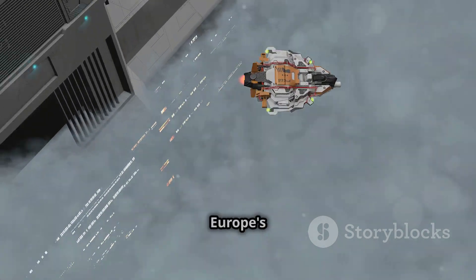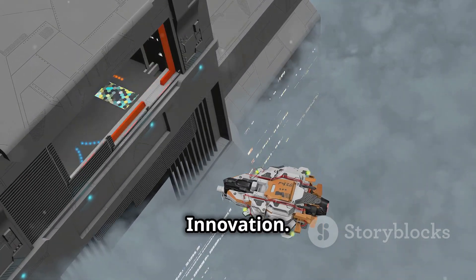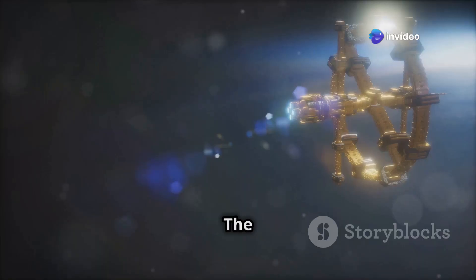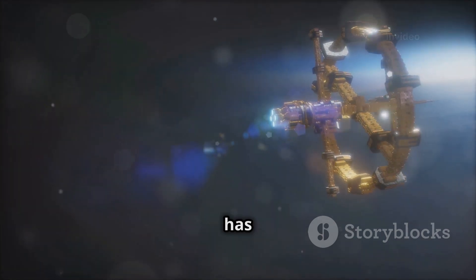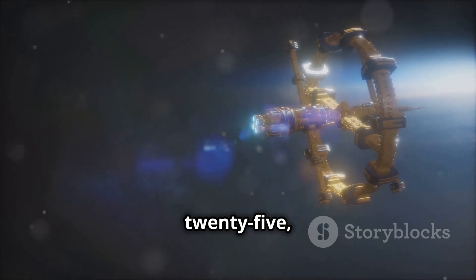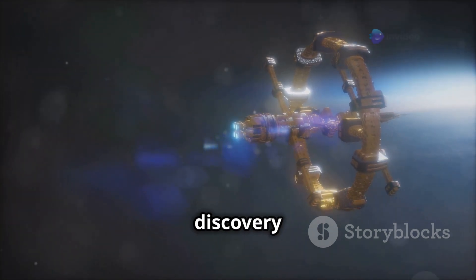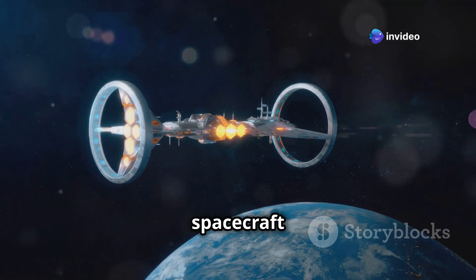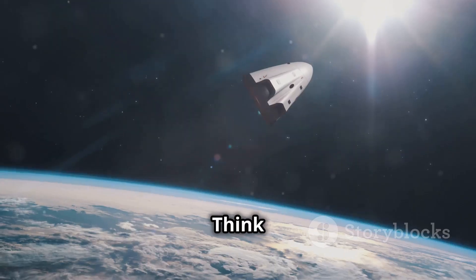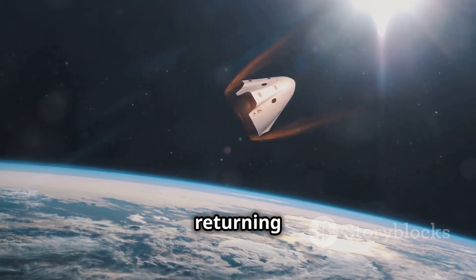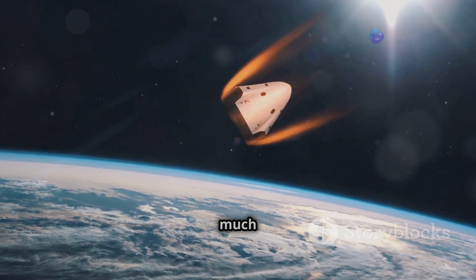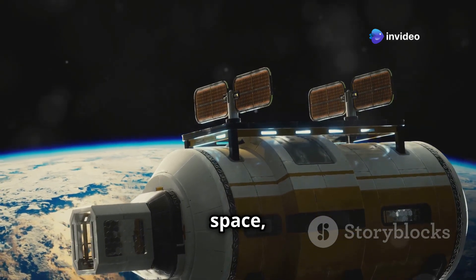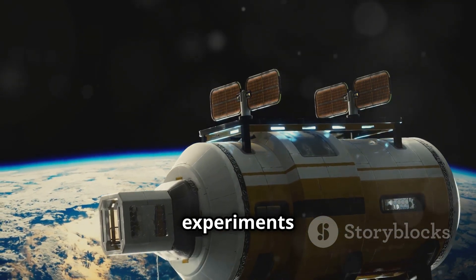Chapter 4: Space Rider and Hera—Europe's double feature of space innovation. Now let's hop across the pond and check out what our friends in Europe are up to in the realm of space exploration. The European Space Agency, or ESA, has a couple of exciting missions lined up for 2025, showcasing Europe's commitment to both scientific discovery and planetary defense. First up we have Space Rider, ESA's very own reusable spacecraft designed for conducting experiments in orbit. Think of it as a space-based laboratory capable of returning to Earth after completing its mission, much like SpaceX's Dragon capsule. Space Rider will be a game changer for scientific research in space.